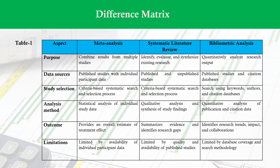In simpler terms, meta-analysis and bibliometric analysis are both quantitative methods that handle large amounts of literature, but their purpose and focus are different. Meta-Analysis is used to summarize empirical evidence and analyze the direction and strength of effects and relationships among variables to address open research questions. Bibliometric analysis, on the other hand, summarizes the bibliometric and intellectual structure of a field by analyzing relationships between different research constituents, such as authors, countries, institutions, and topics.